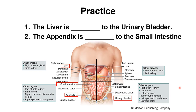Let's apply what we've learned. For number one: the liver is blank to the urinary bladder. The liver is in the right upper quadrant, and the urinary bladder is down below. So you could say the liver is superior to the urinary bladder.